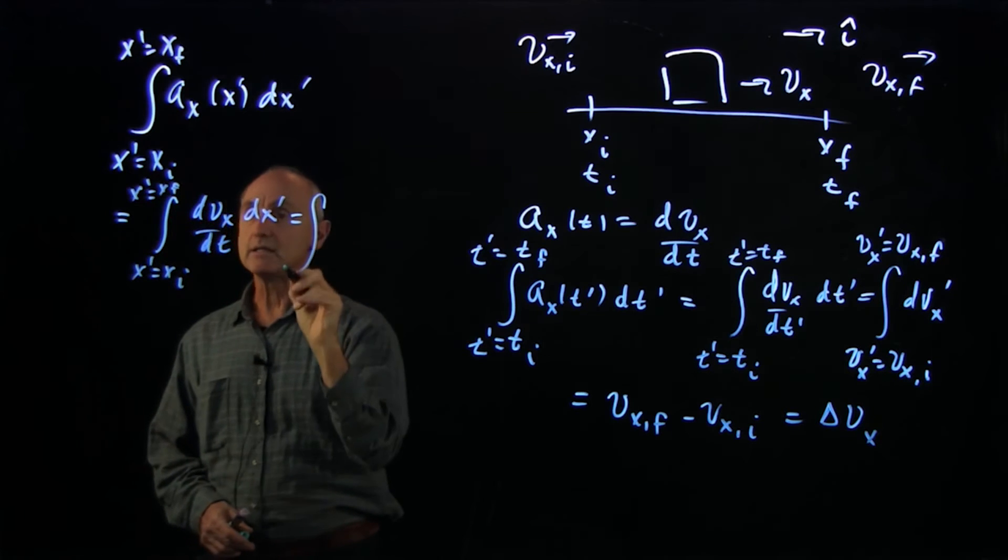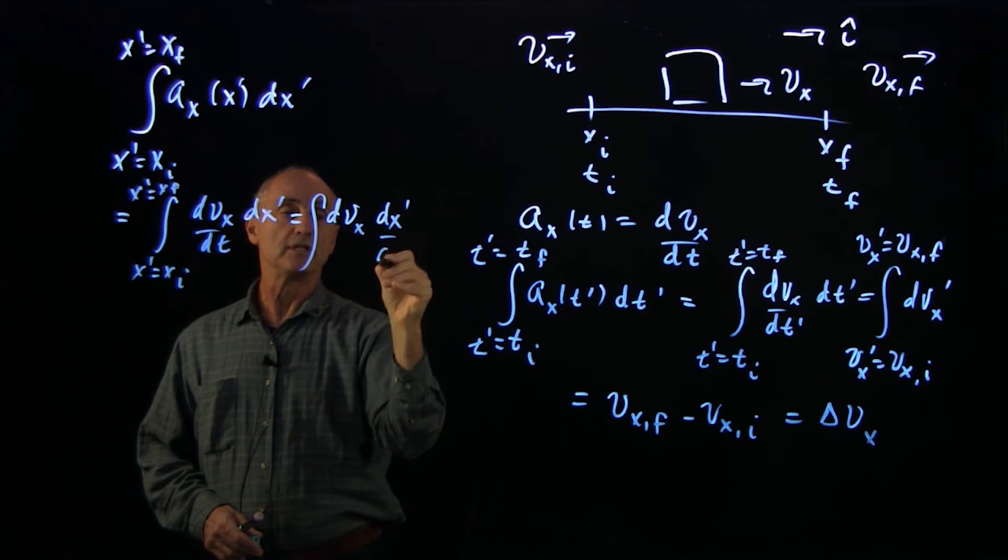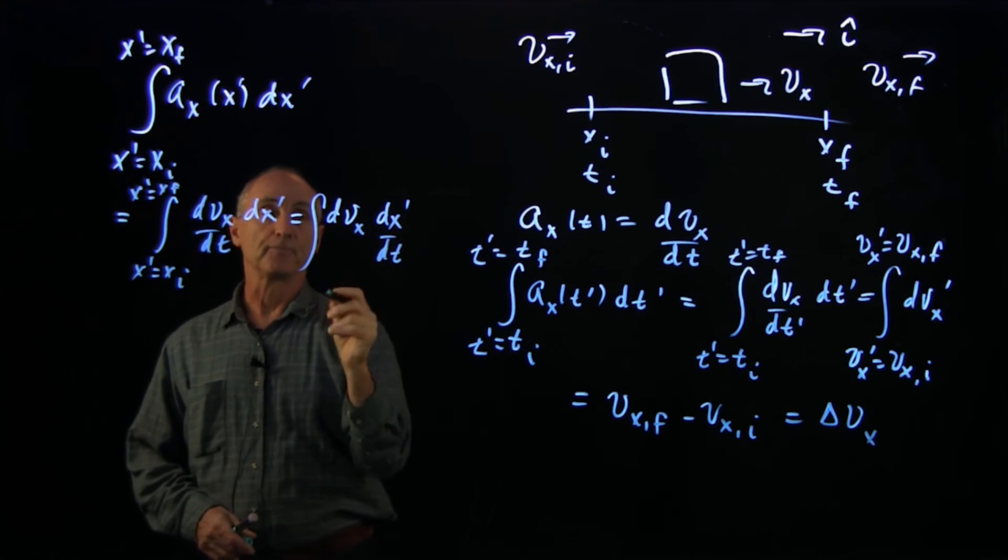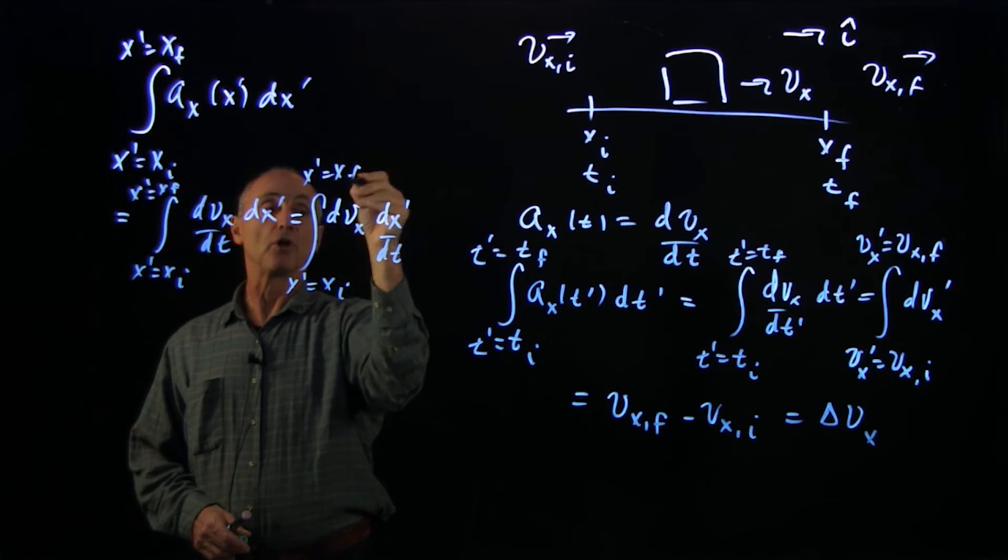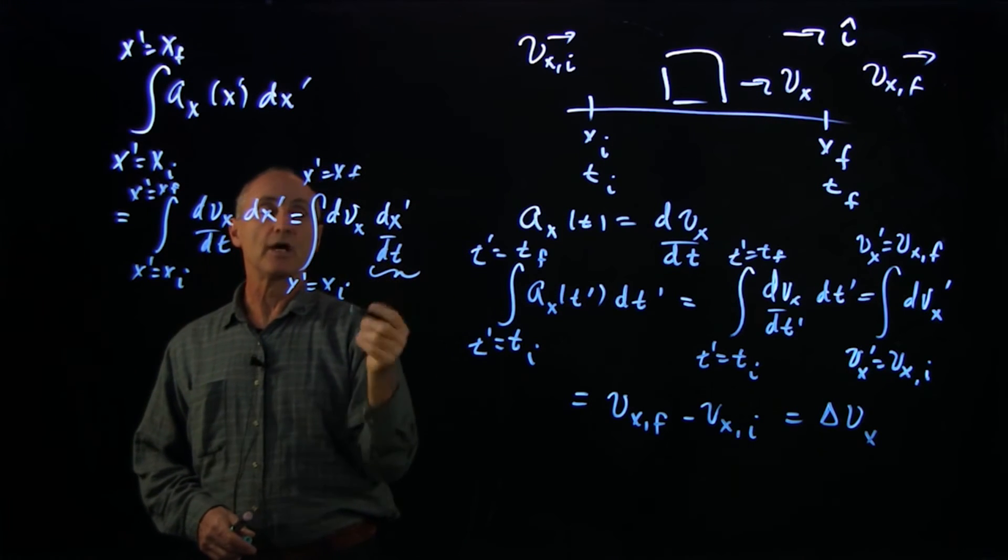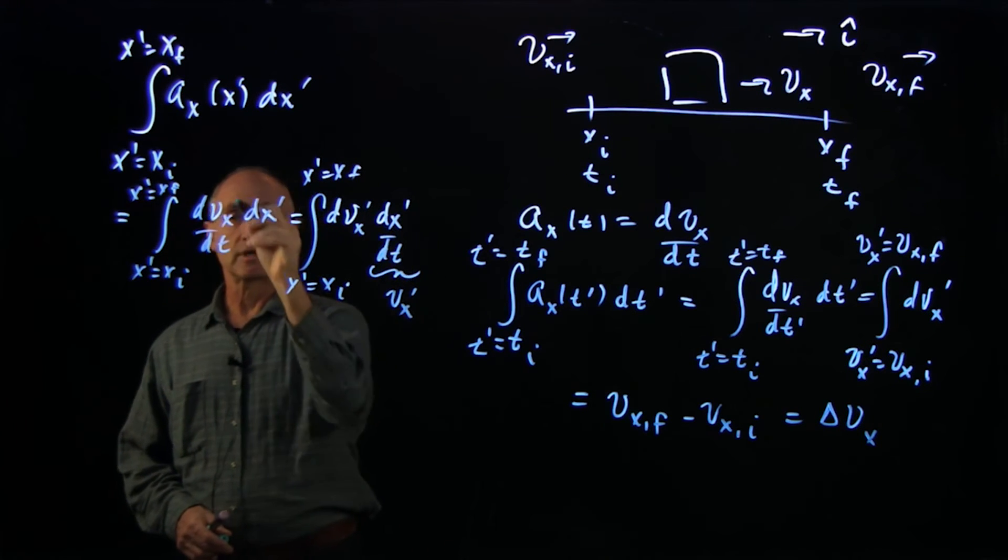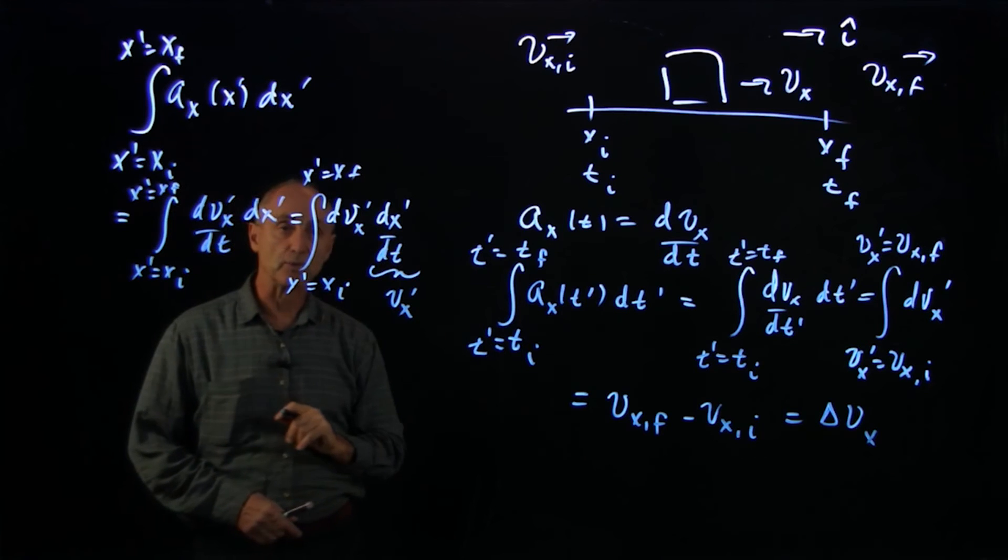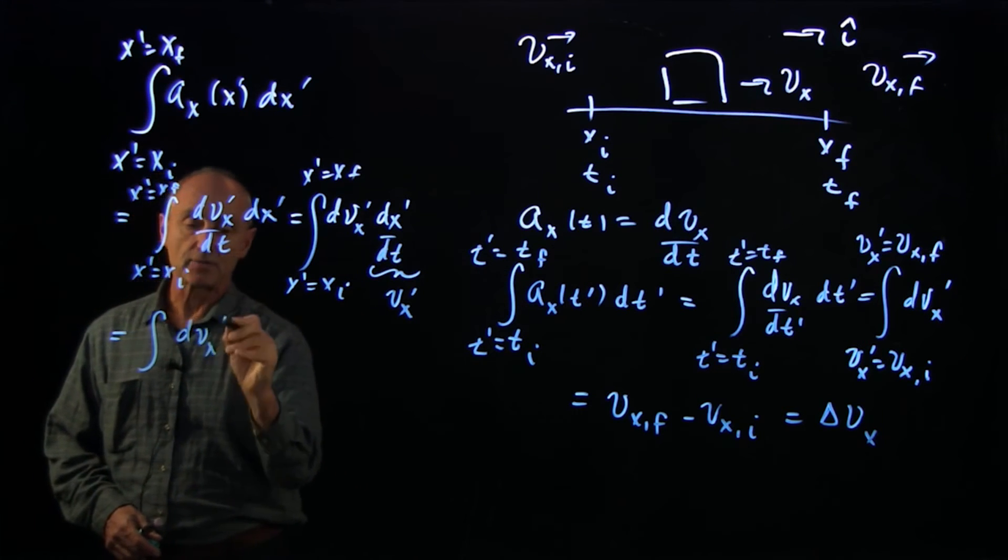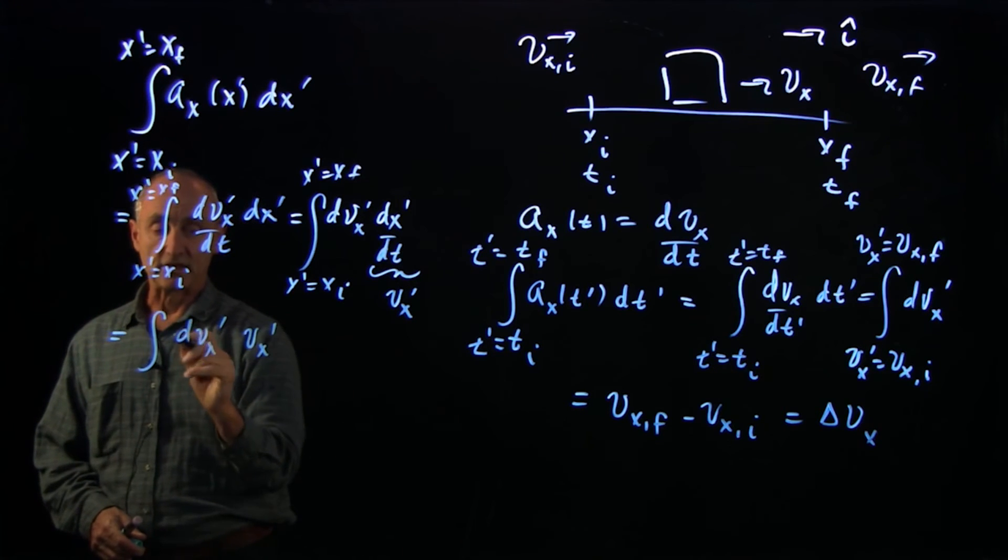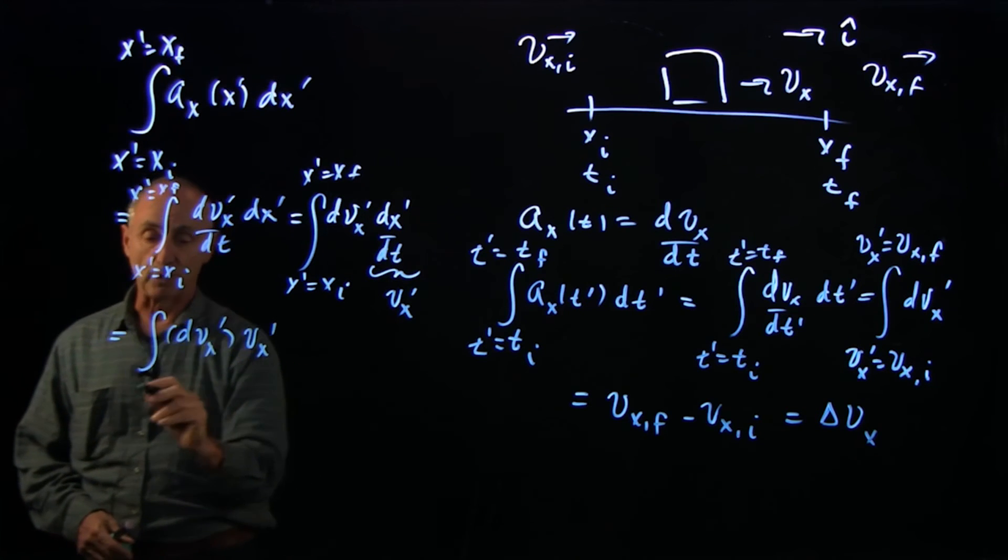But now notice we're going to rewrite this integrand as dvx times dx prime over dt prime, dt. And when we do that, we have this result that dx prime/dt prime is precisely what we mean by vx. Now I'll introduce some dummy variables there as well. So what our integrand becomes is dvx prime vx prime. That's not a function. Those are a product of an integrand, of a differential times vx prime.